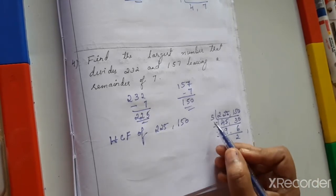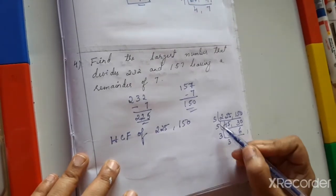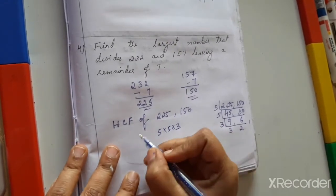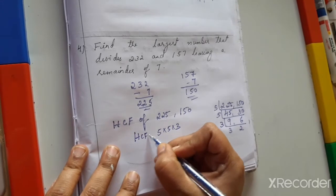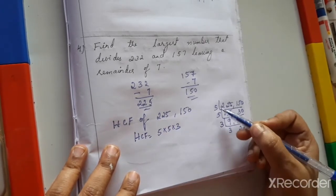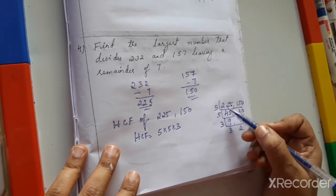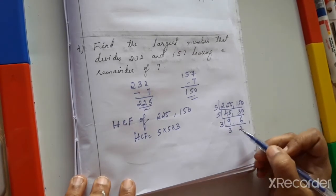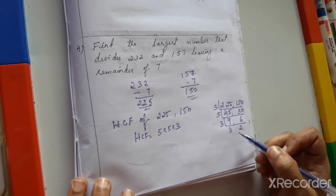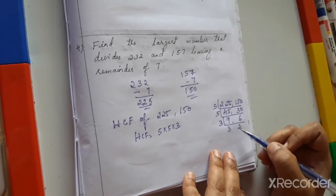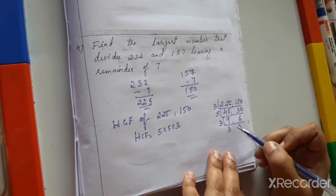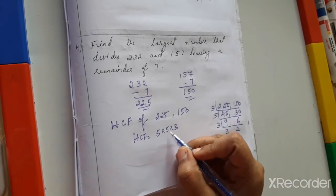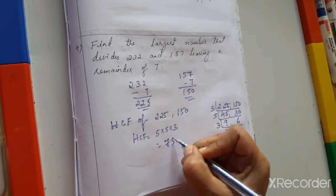So HCF = 5 × 5 × 3 = 75. The answer is 75. Remember: greatest number means find HCF, smallest number means find LCM. Depending on whether a remainder is given, subtract or add accordingly.